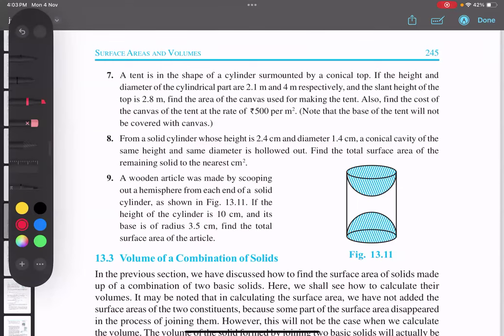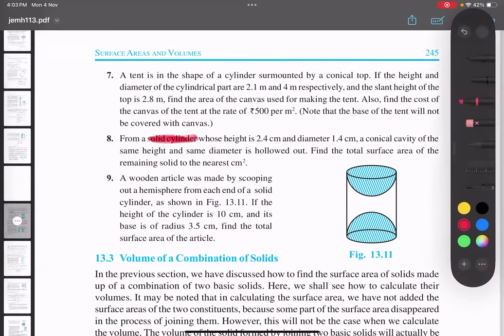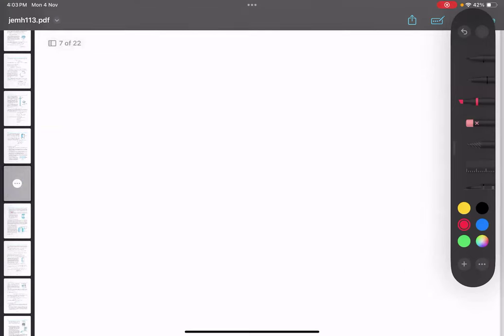The question number eight talks about a solid cylinder. Okay, so we'll keep drawing the figure along with it whose height is 2.4, diameter 1.4. So let me just draw a cylinder. Your drawing should be good to understand.